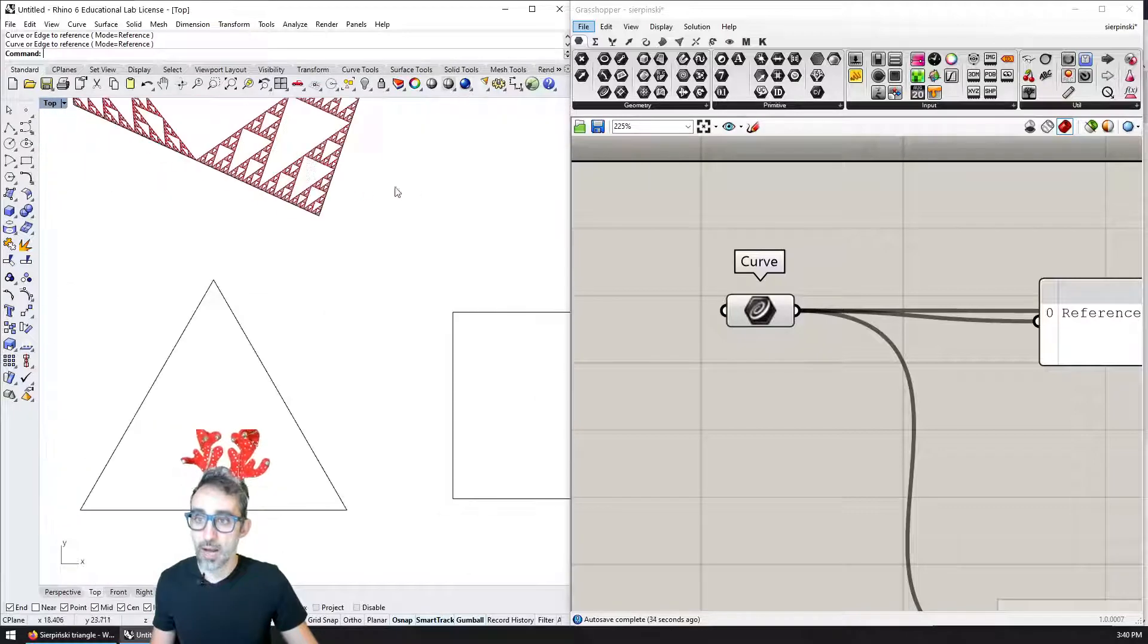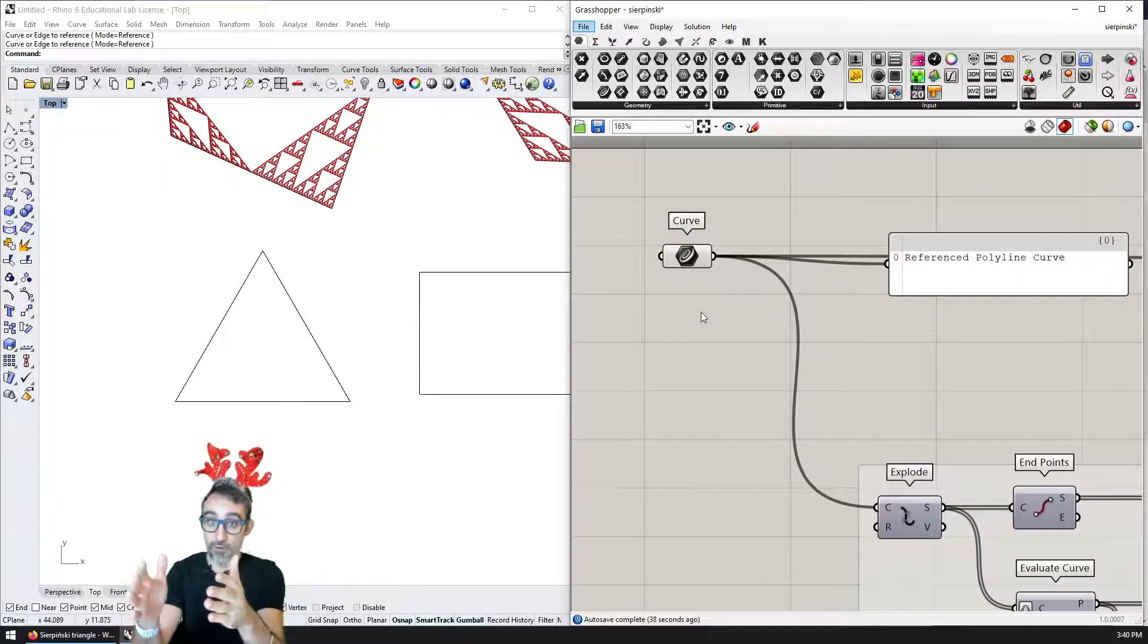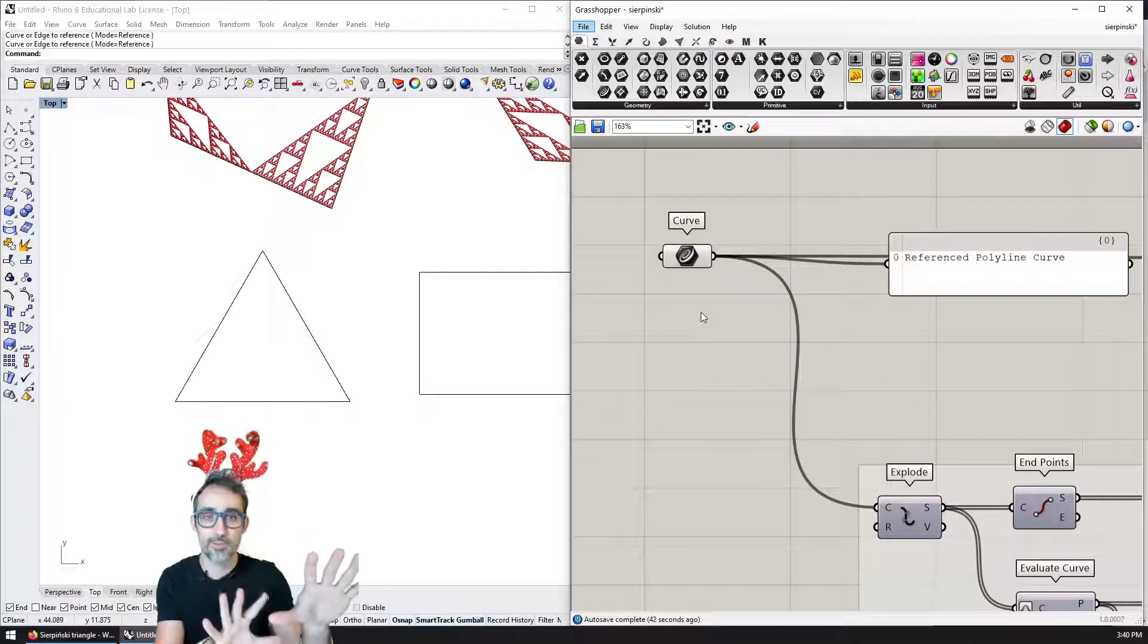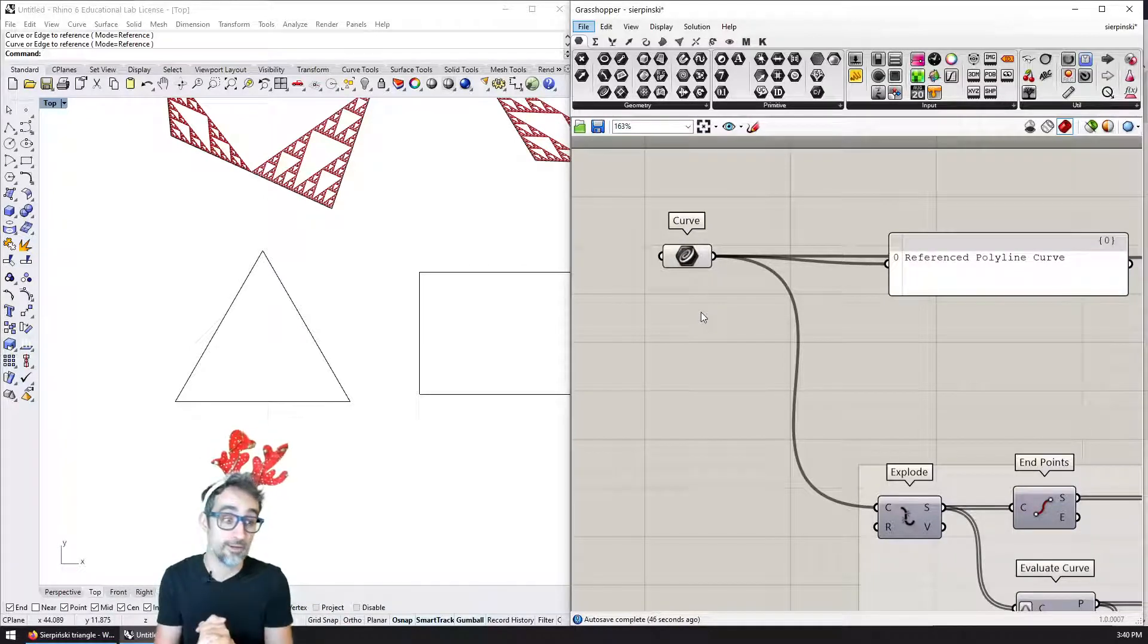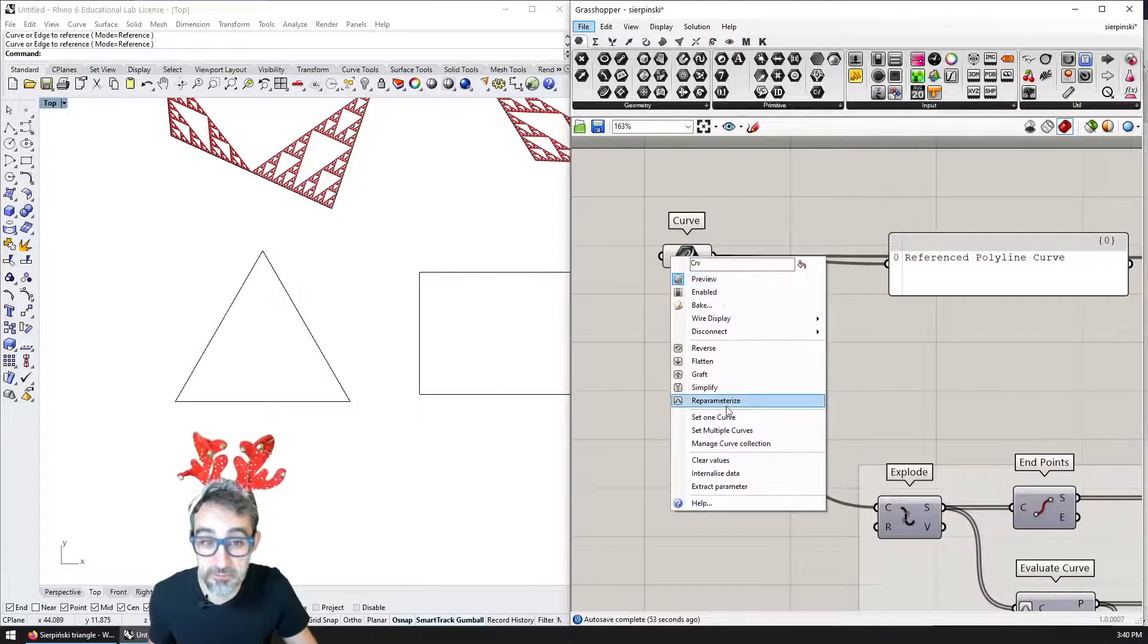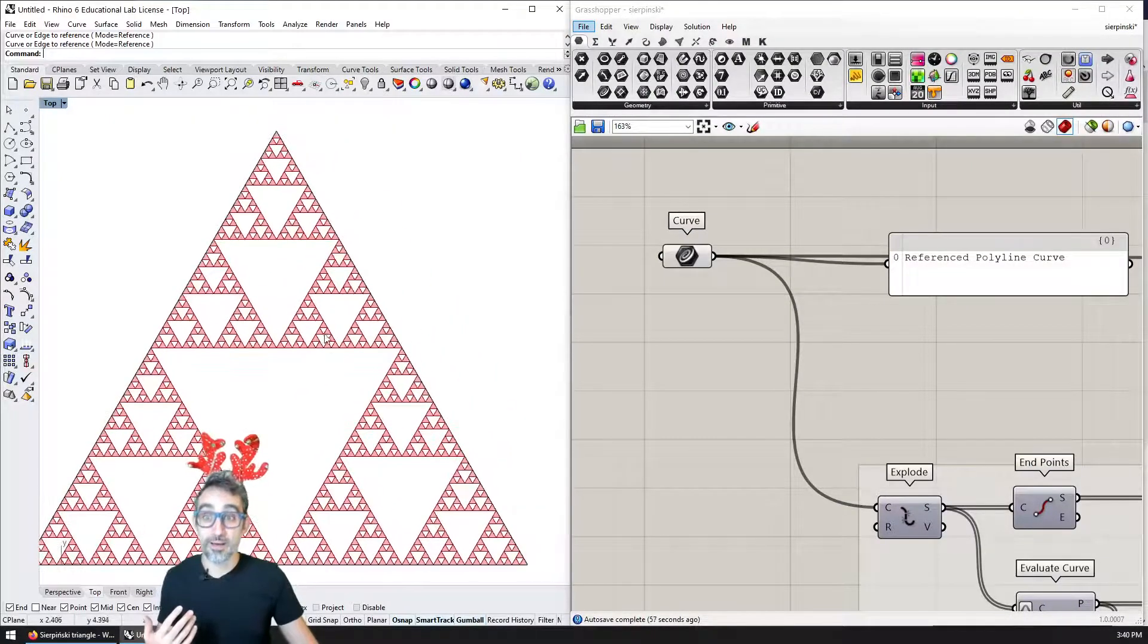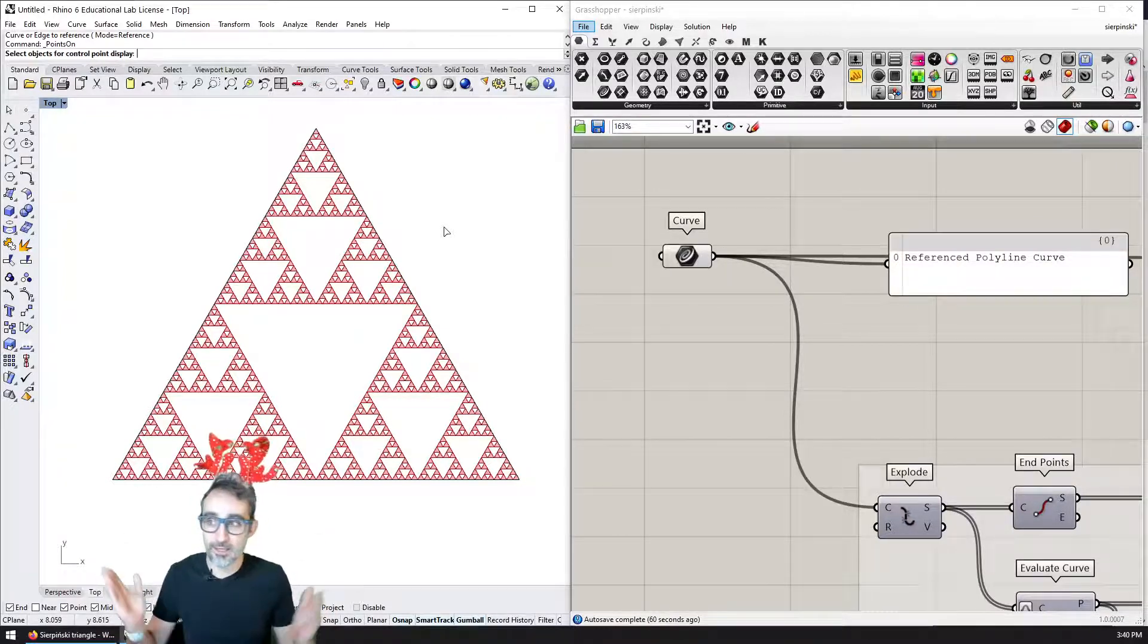So as I said, the first part of this video is going to be how this works and the algorithm. The second part is going to be Grasshopper implementation, and the third one is going to be C sharp scripting implementation. I hope this is going to be nice and fun. I'm doing this because it looks like a Christmas tree basically. And at the time of this recording, we are ramping up into Christmas holidays. So I thought it was a fun thing to do.